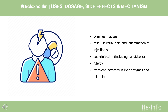Side Effects. Common adverse drug reactions (ADRs) associated with the use of dicloxacillin include: diarrhea, nausea, rash, urticaria, pain and inflammation at injection site, superinfection including candidiasis, allergy, and transient increases in liver enzymes and bilirubin.